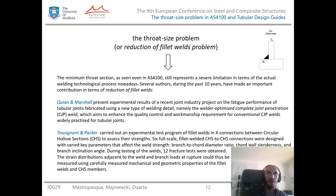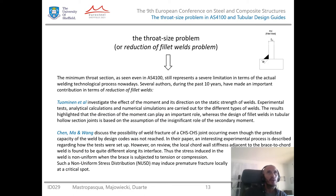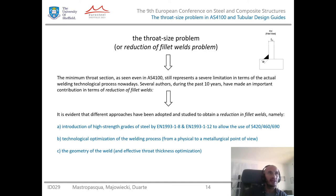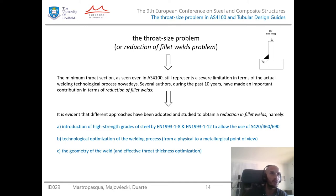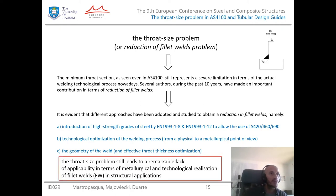The throat size problem was studied by several authors and is mainly addressed by three approaches. The first is introduction of high strength steel grades, such as S420, S460, or S690 as quoted in Eurocode 3 part 1-12. The second is technological optimization of the welding process in a metallurgical sense. Finally, the third approach takes care of the geometry of the weld — meaning the size and spatial position of the weld.